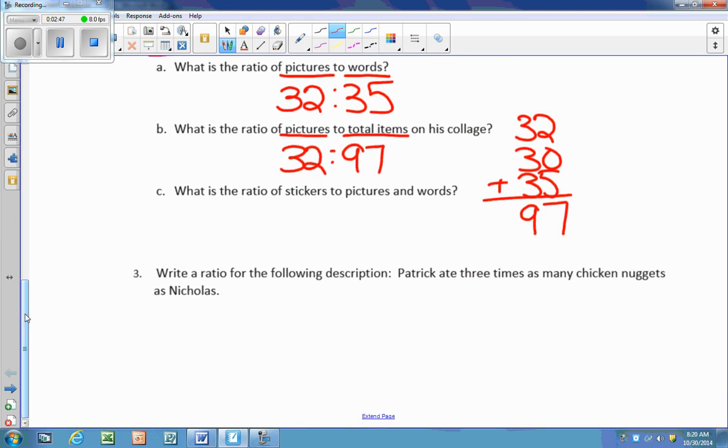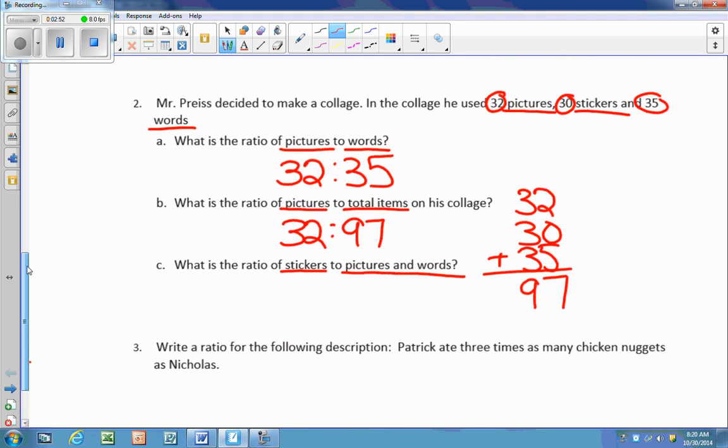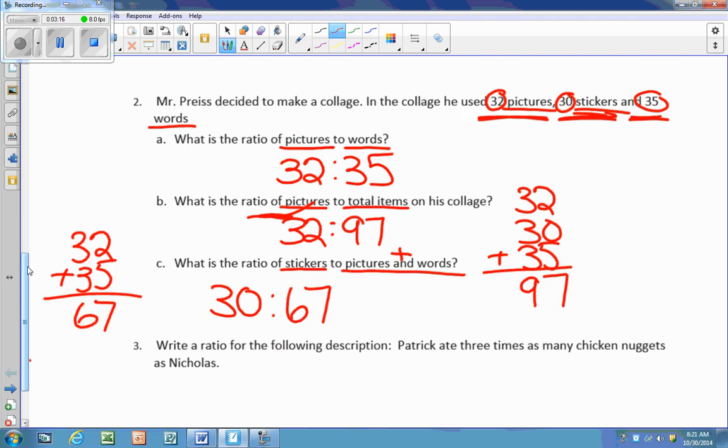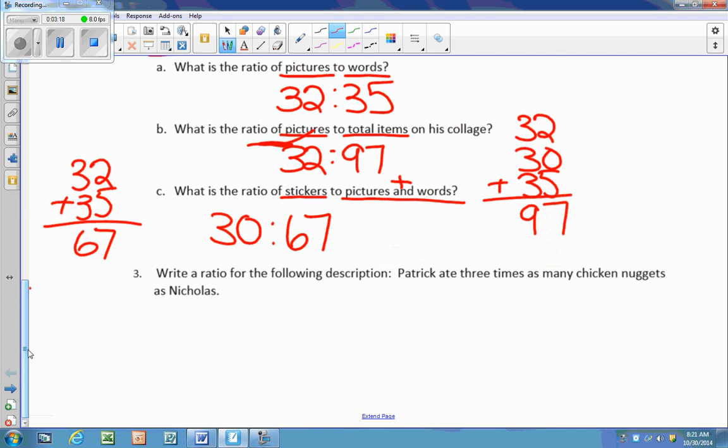What is the ratio of stickers to pictures and words? So again, I'm going to go back up. And I have 30 stickers. And then this word 'and' reminds me to add. So now I'm going to look at pictures, which is 32, and words, which is 35. And I'm going to add my 32 plus 35. That's going to give me a final answer of 67 for the ratio of 30 to 67.